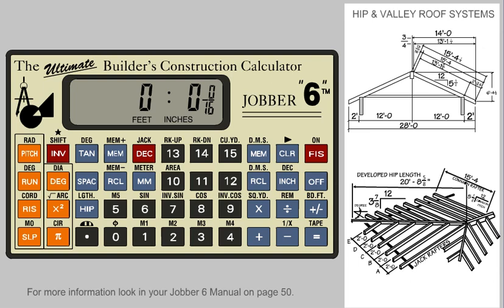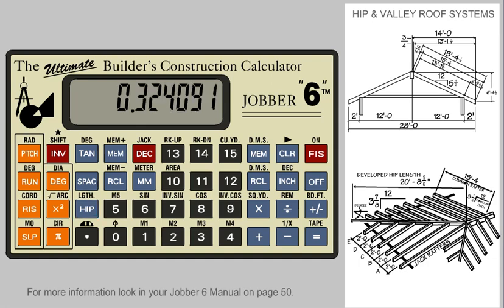If for any reason we need to go back to the developed hip pitch, we do this by first pressing the invert key and then the pitch key. This takes us back to the common rafter pitch, and now we can go back to the hip pitch. We may want to know the degree of the hip slope for making our end cuts. This is found by pressing the invert key and then the tangent key. This is the developed degree of the hip beam.